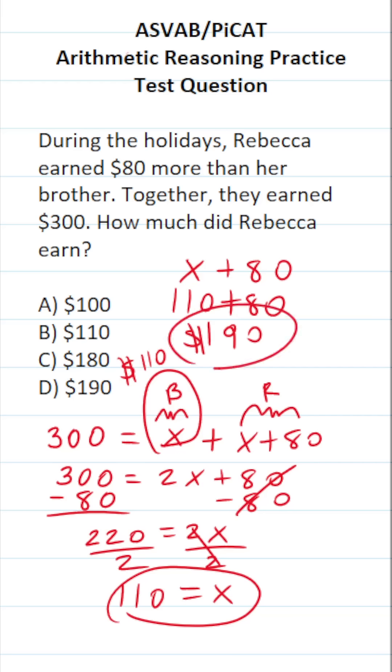So Rebecca earned $190 and her brother earned $110. So the answer to this one is D, Rebecca earned $190.